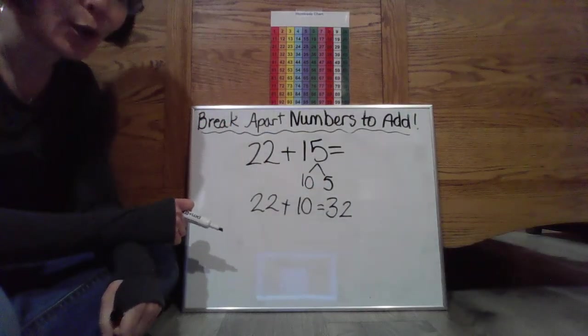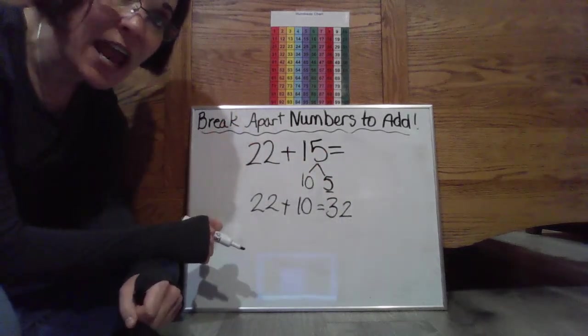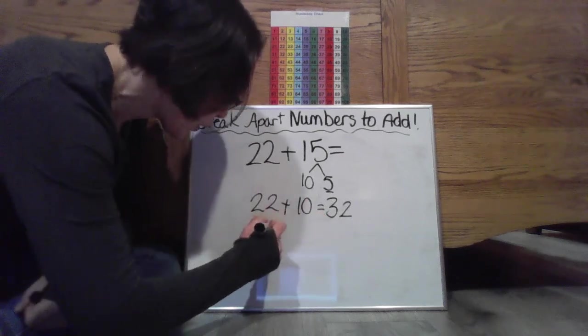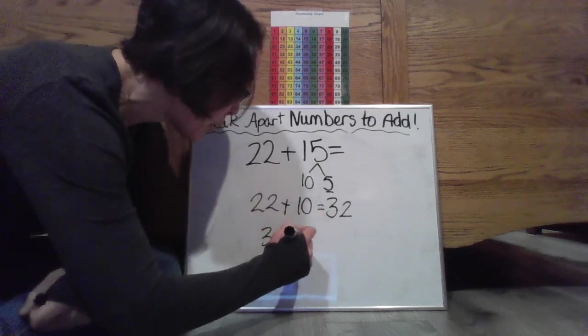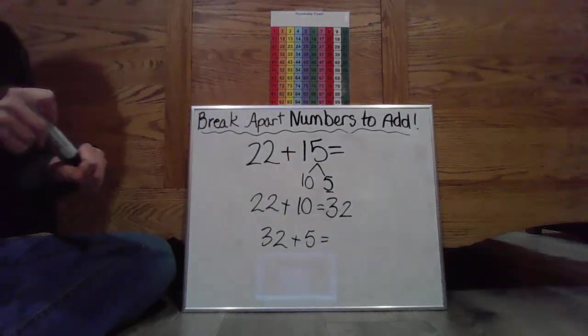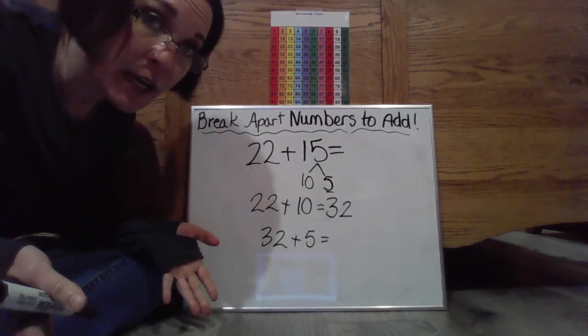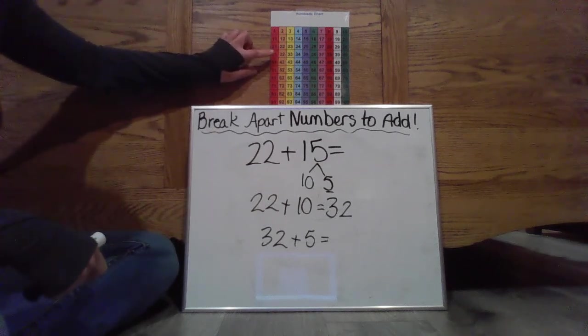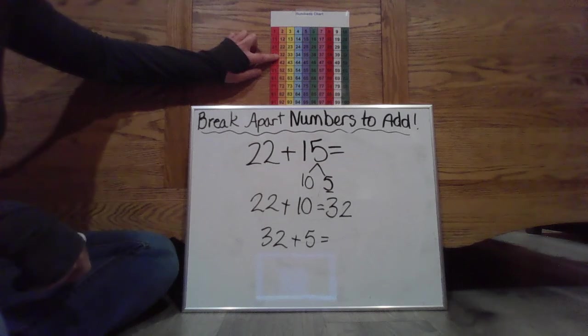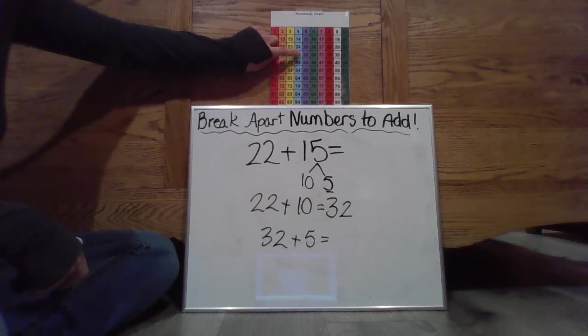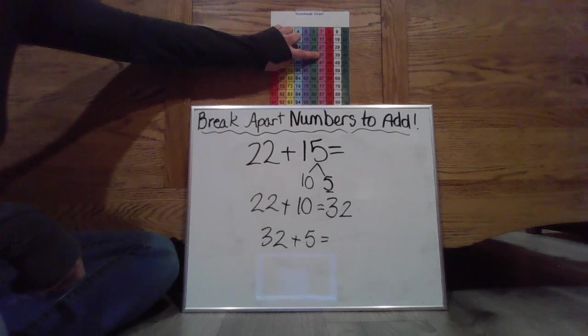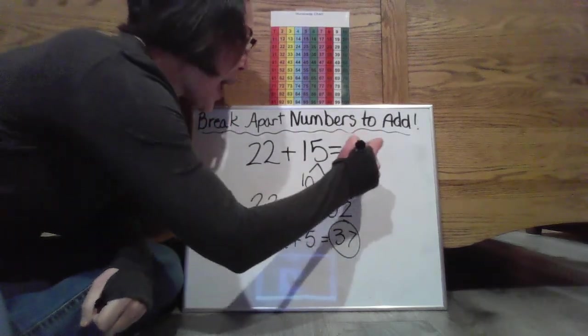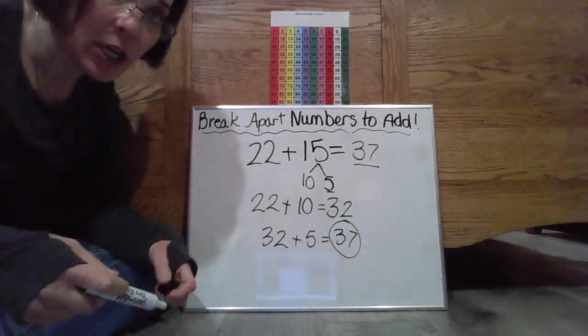But am I done? Nope. Because I still have to add in those five ones. So now I'm going to take this sum 32 plus five. So I could count on or maybe I could even use my hundreds chart as a helper. If I'm at 32, now I'm going to go five more. One, two, three, four, five. I'm now going to end at 37. So that should be my total.